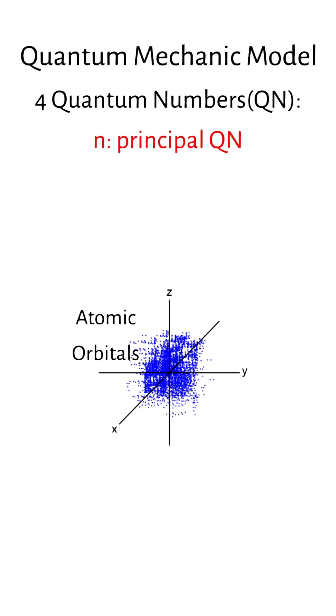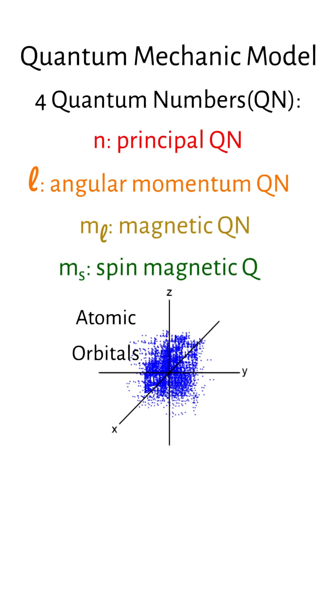They are N, the principal quantum number; L, the angular momentum quantum number; M sub L, the magnetic quantum number; and M sub S, the spin magnetic quantum number.